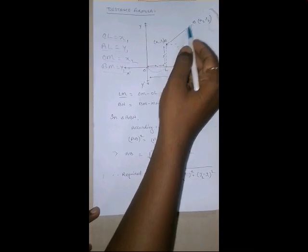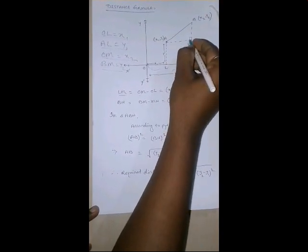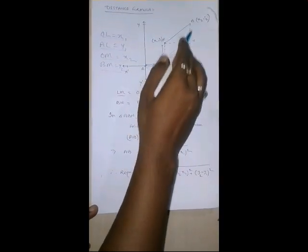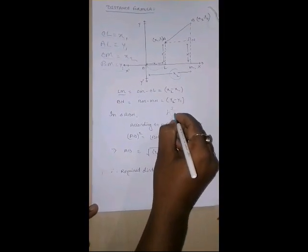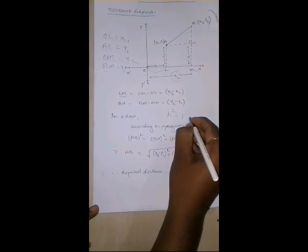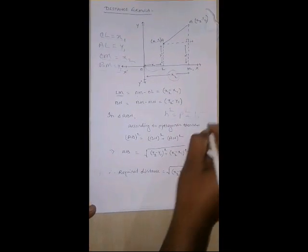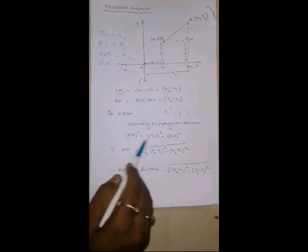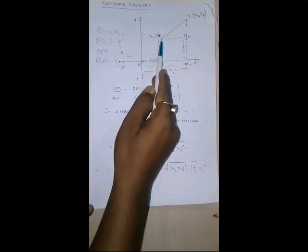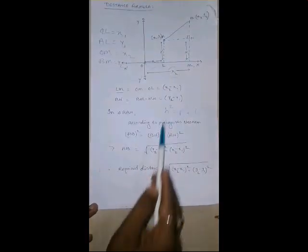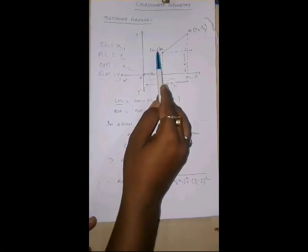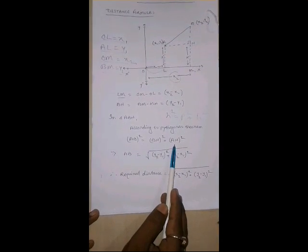Now, come to this triangle. As you can see, this is a right-angled triangle ABN. And by Pythagoras theorem, we know that hypotenuse square equal to perpendicular square plus base square. So, if I will use this theorem here, hypotenuse is AB, perpendicular is BN, and base is AN.